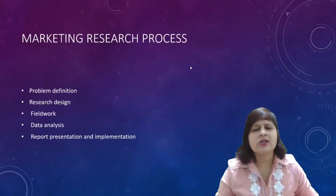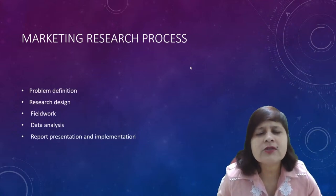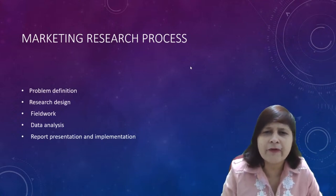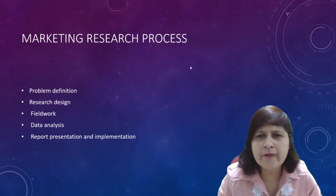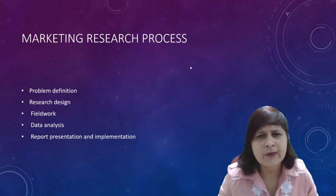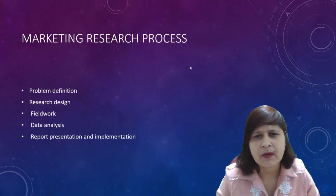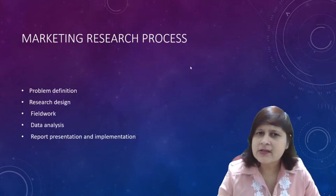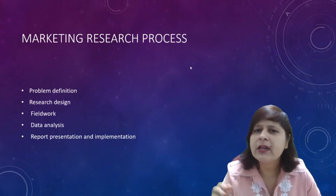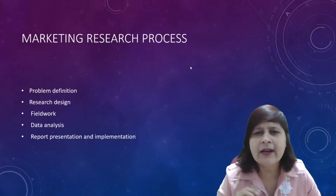The marketing research process has several steps. The first step is problem definition. Anything which needs a solution is a problem. A well-defined problem is the way to get the solution — if you have understood your problem well, only then can you find the solution. A well-defined problem is half done. You must define your objective — for which problem do you want to collect data?